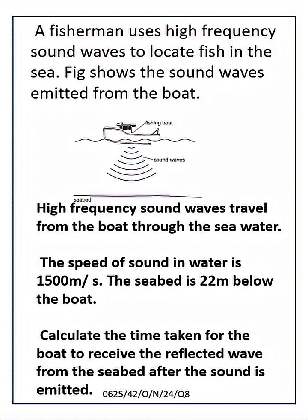In this question, the key point is the reflected wave from the seabed after the sound is emitted. The reflected sound is called echo. From the boat, the sound waves are emitted and after hitting the seabed, the sound waves are reflected back to the boat. So sound travels twice — from the boat to the seabed and from the seabed back to the boat. Therefore, the distance travelled by the sound is doubled, and the speed equation based on echo timing is: v = 2d/t.